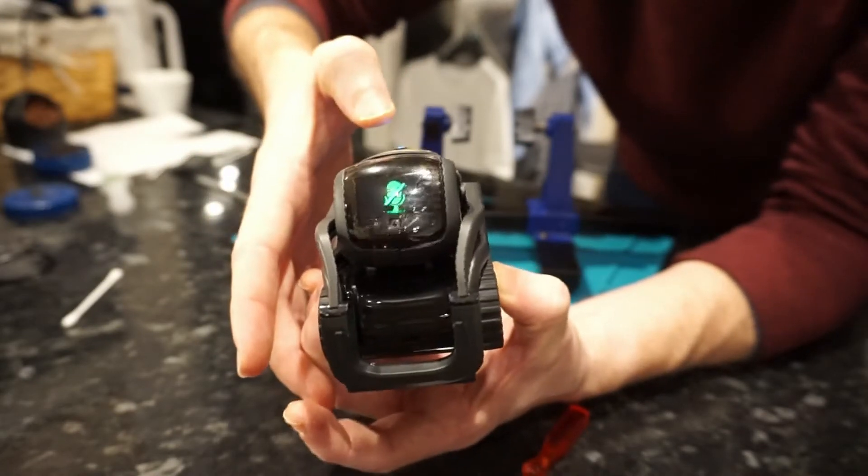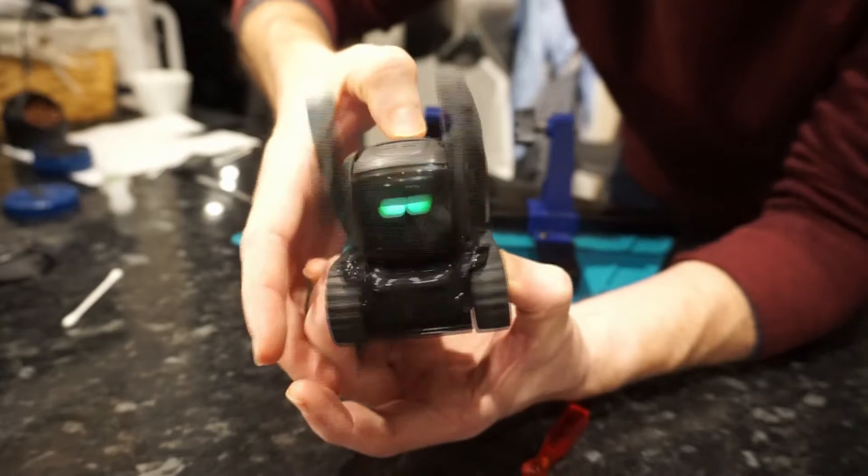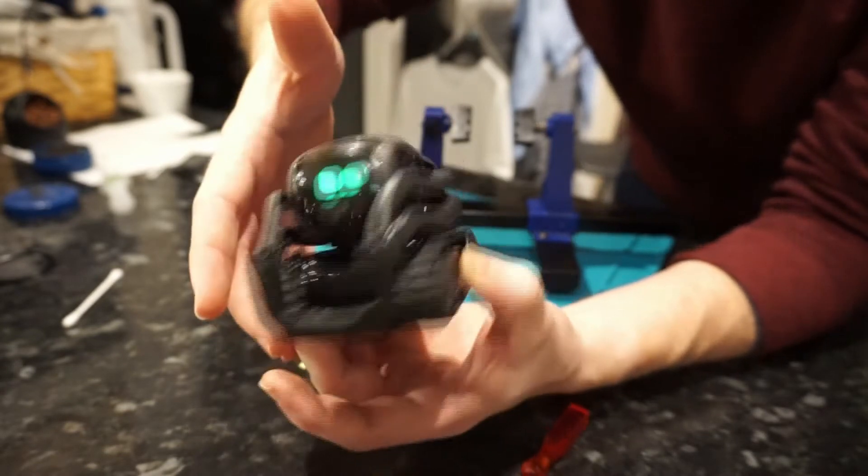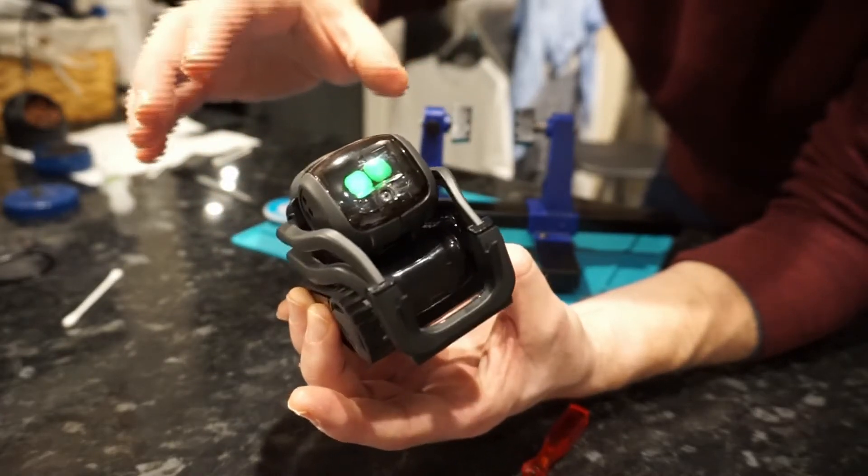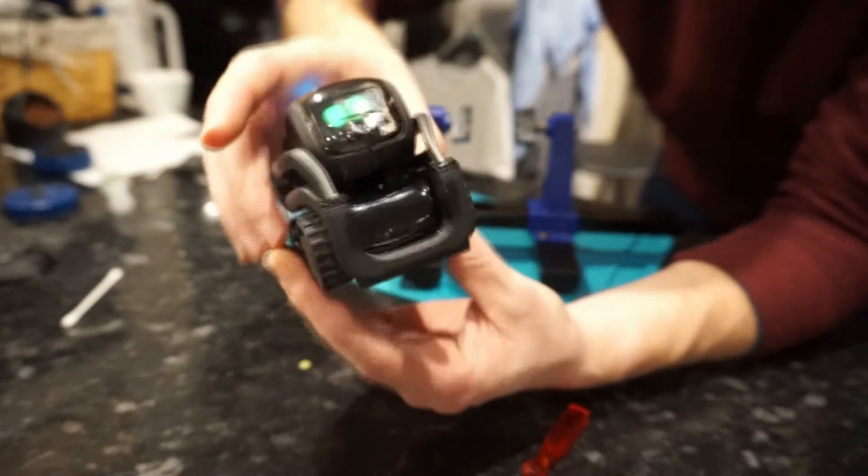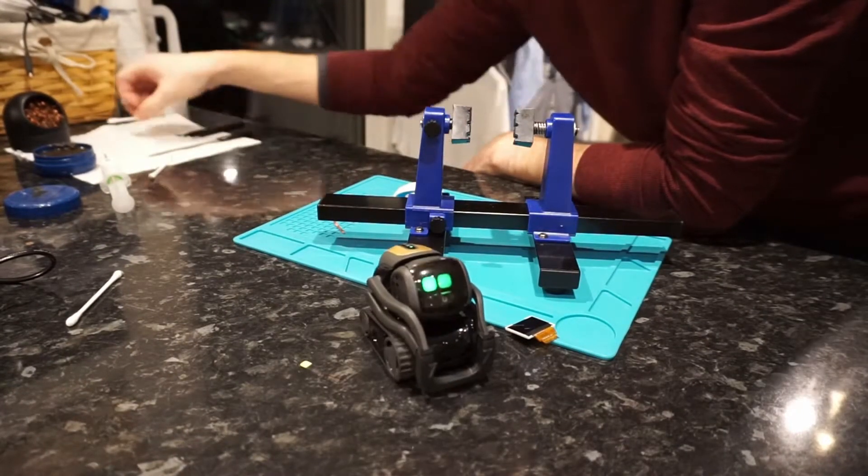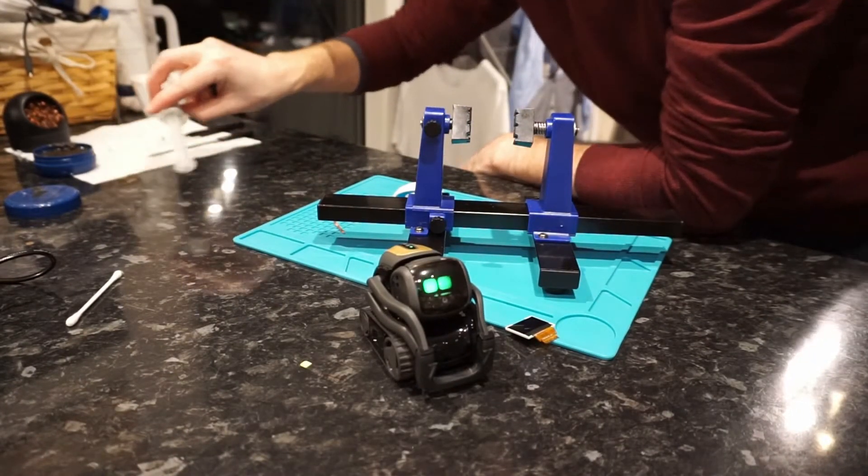I think a lot of people in the past would see that the vector screen was failing. There was no support from Anki because they'd closed and they would basically just bin the robot. I'm happy to report that I think Digital Dreamlabs, the new owners, they have started a repair shop in the US. So it might be worth contacting them.